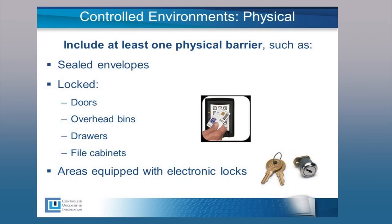For CUI that exists in the physical environment, such as documents, the CUI program requires that inside a controlled environment there is at least one physical barrier to prevent unauthorized access to CUI. Organizations have some flexibility when deciding what constitutes a controlled environment. Suitable environments can be established using measures that limit or control access to the area. Examples include using standard key locks, utilizing electronic access control devices, or employing security or administrative personnel. In areas where employees work in close proximity to individuals who may not have the same need for access — or what we call lawful government purpose in the CUI program — it may be necessary to ensure the workforce has adequate security equipment, such as lockable doors, cabinets, or drawers, to secure CUI when it is not in use.